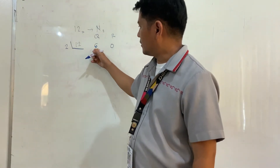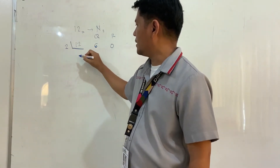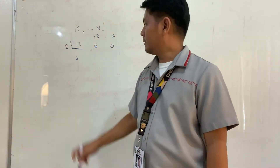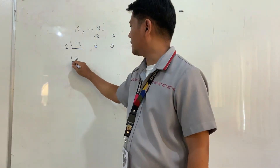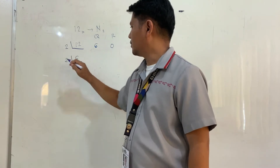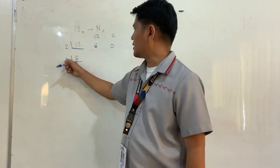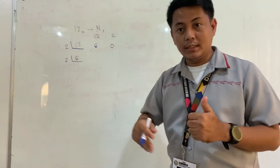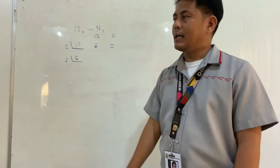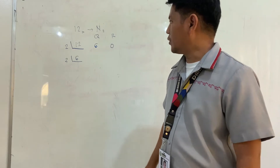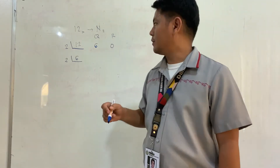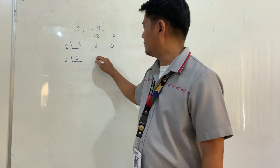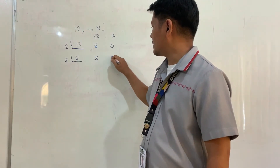The quotient will now be our new dividend. This number will be divided again by 2, which is the base of a binary number. We simply continue the process until the quotient becomes 0. So 6 divided by 2, we have 3, remainder 0 as well.